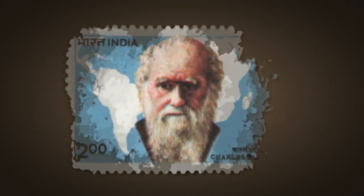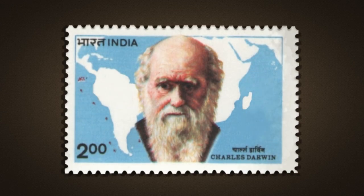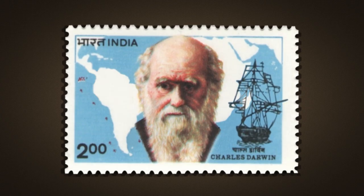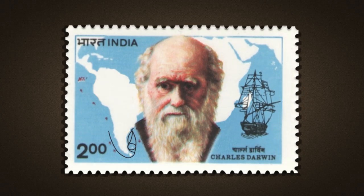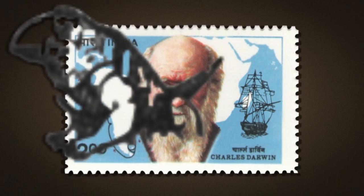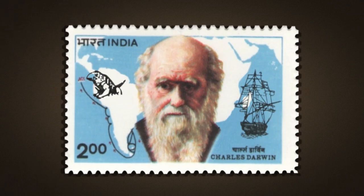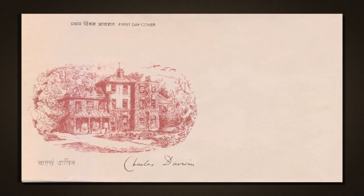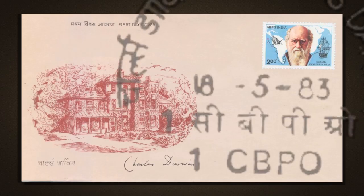India too issued a commemorative stamp on his 100th death centenary. The stamps show the portrait of Charles Darwin along with HMS Beagle and the route it took to the Galapagos Islands. A line drawing of the land iguana native to the Galapagos Islands has been shown. The first day cover was released on 18th May 1983 along with the stamps.